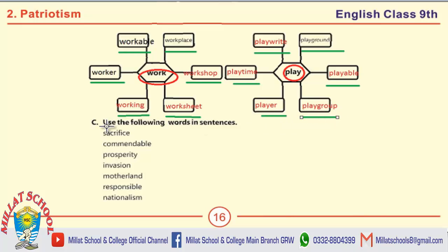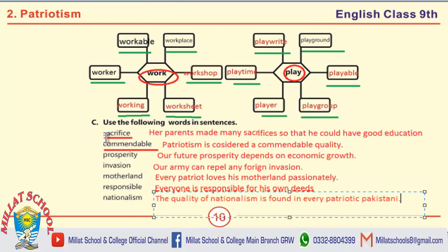Next, Part C: Use the following words in sentences. The words are: sacrifice, commendable, prosperity, invasion, motherland, responsible, and nationalism. Let's start with the very first word, sacrifice.